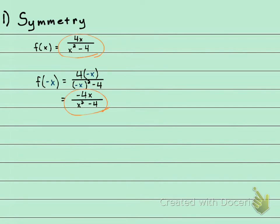The answer to that is yes. If I rewrite this and take this negative in the numerator and pull it out in front, it's going to be the opposite of 4x over x² - 4. I'm gonna have the opposite of what I started with, so this is going to be odd.